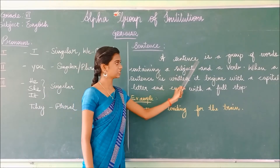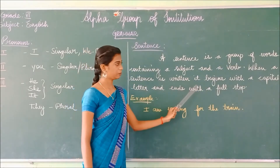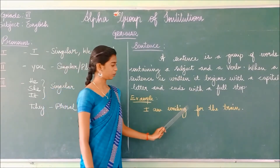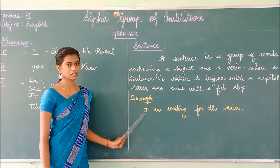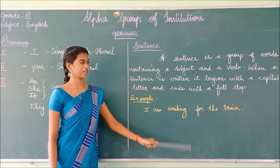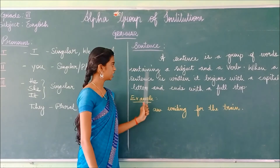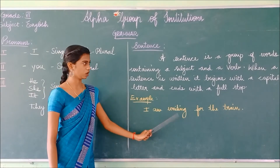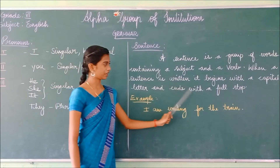Shall I read it once again? A sentence is a group of words containing a subject and a verb. When a sentence is written, it begins with a capital letter and ends with a full stop. For example: I am waiting for the train. The sentence starts with a capital letter and also ends with a full stop. I is the subject, and waiting is the verb.